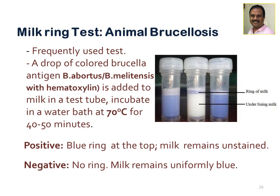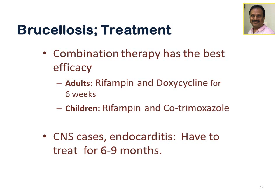Treatment of brucellosis: the combination therapy is best. For adults, rifampin with doxycycline for six weeks is the recommended regimen. For children, rifampin and co-trimoxazole (trimethoprim-sulfamethoxazole) is given. In cases of central nervous system infection or endocarditis, treatment must be prolonged for up to six to nine months.